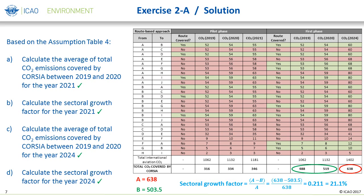Using the 2024 sectoral baseline and the same formula as before, we can now calculate the sectoral growth factor for the year 2024, which is 21.1%. It is interesting to note that the sectoral growth factor for 2024 is affected not only by changes to CO2 emissions values per year, but also by changes to the number of states who additionally volunteer to participate in a given year and the related changes to the additional routes covered by CORSIA.